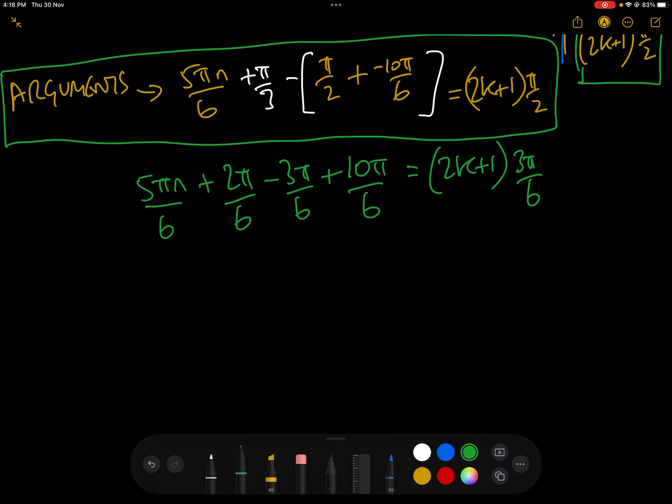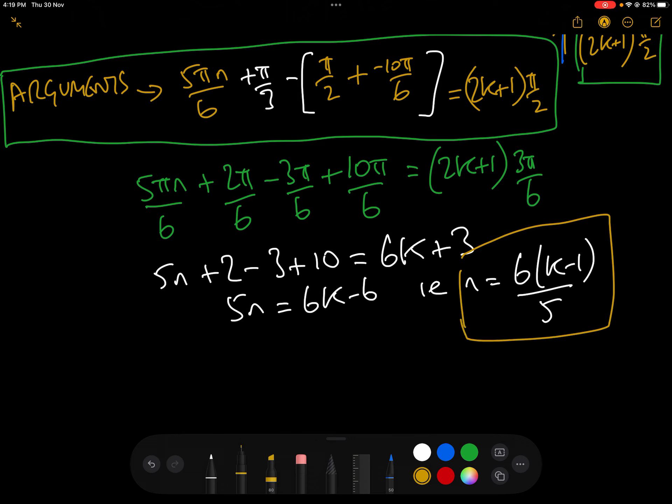Equals 2k plus 1 times 3 pi over 6, where k is an integer. Let's get rid of the 6 and the pi. That leaves us with 5n plus 2 minus 3 plus 10 equals 6k plus 3. Let's get everything to one side. We're left with 5n equals 6k minus 6, i.e. n equals 6 times k minus 1 over 5. So we have n as 6 times k minus 1 over 5, where k is an integer.